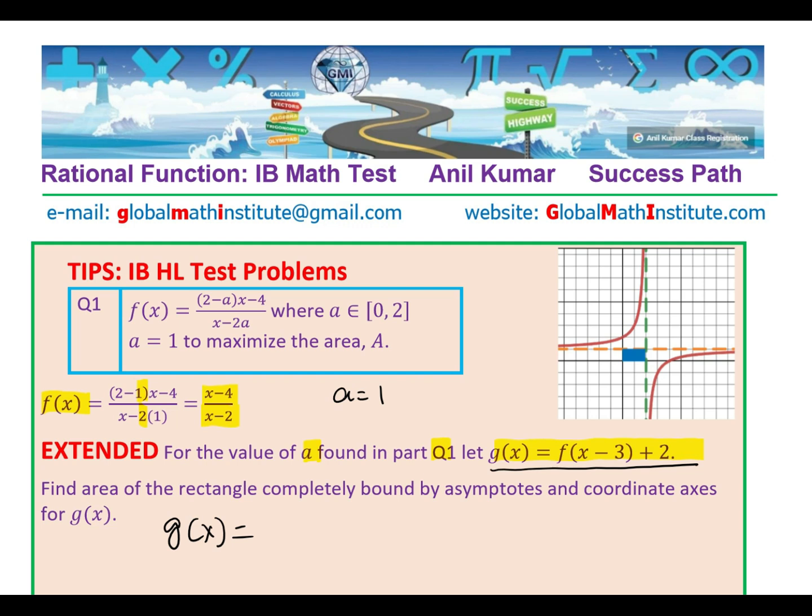That is f(x-3). So we get (x-3-4)/(x-3-2) and then add 2. And simplify this. So we get (x-7)/(x-5) + 2. So that becomes g(x).